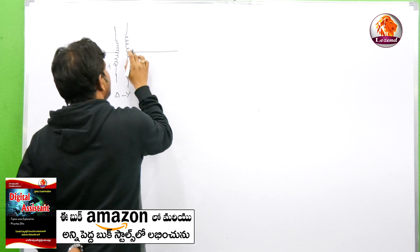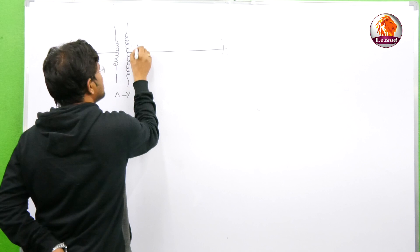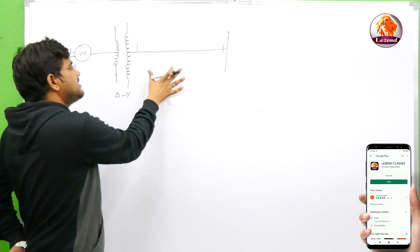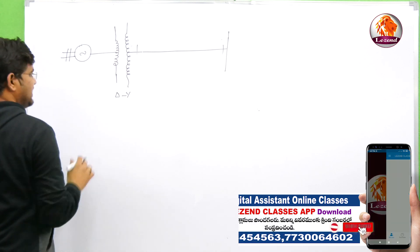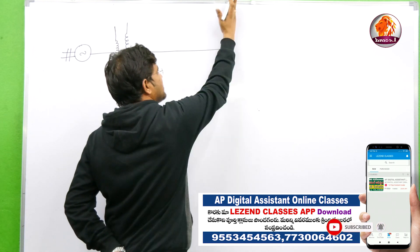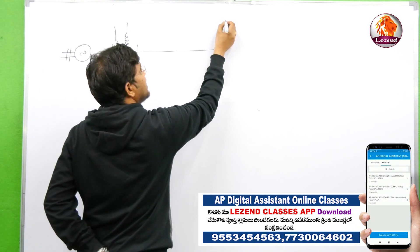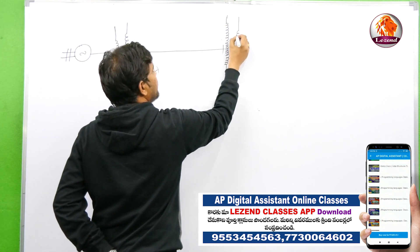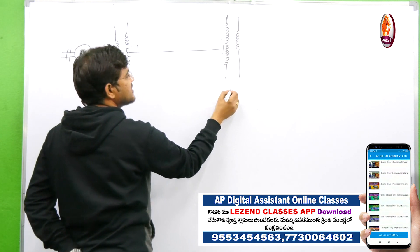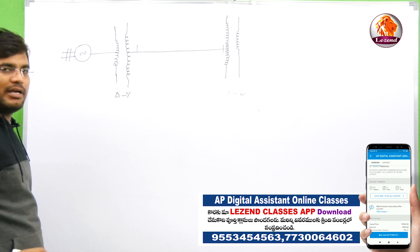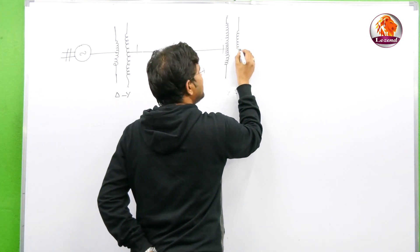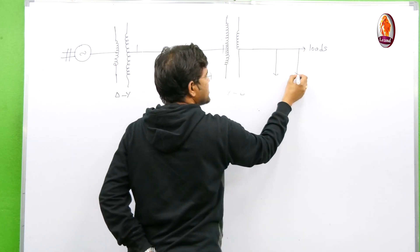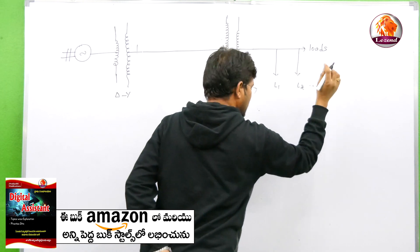After step-up, we transmit the power in this way. This is the transmission system. We are pumping from the generating station through the transmission system. Step down using a star-delta transformer connection. This is distributing. These are the loads. Here we are connecting various loads: load 1, load 2, load 3, up to n loads.